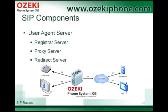SIP servers can be Registrar, Proxy or Redirect Servers. Registrar servers store names and addresses of clients. Proxy servers forward call requests to IP phones and to other servers. And finally, Redirect Server is responsible for finding the location of endpoints. It is useful in case of mobile users when their locations are always changing.